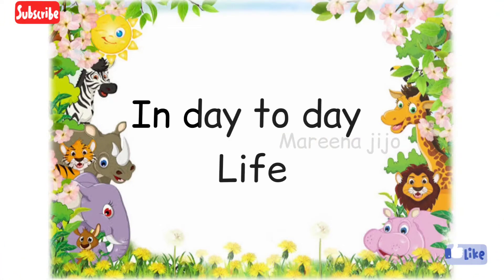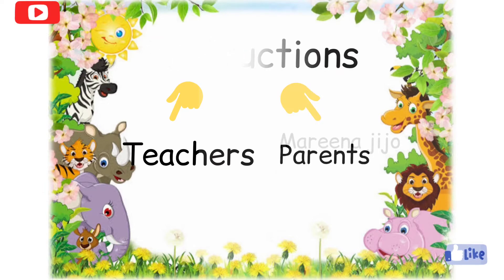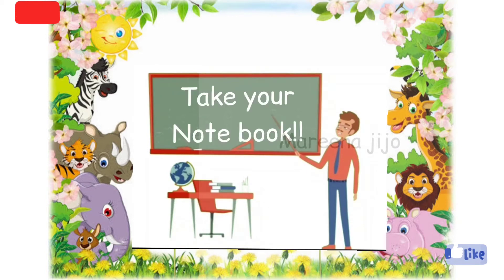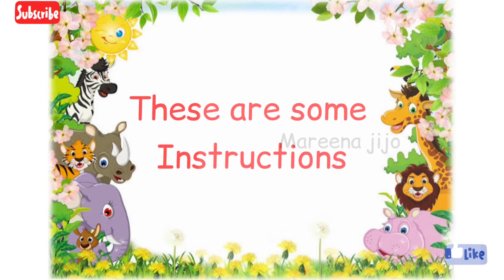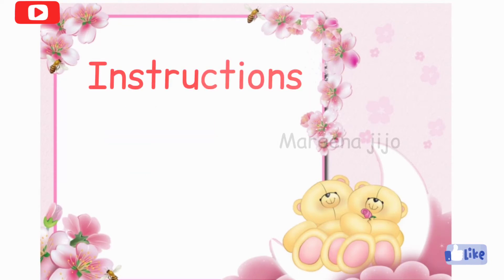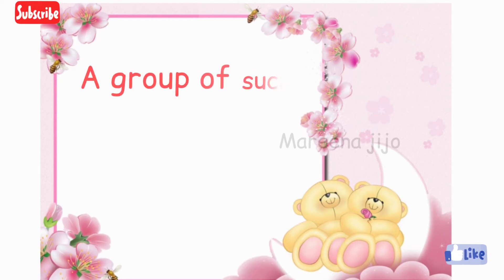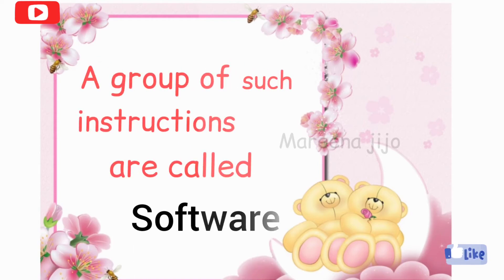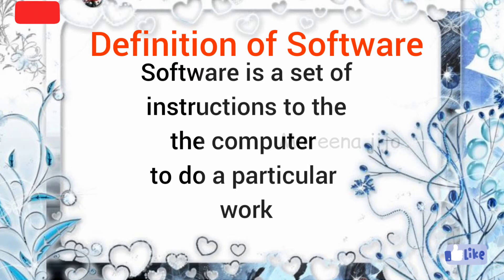In day to day life, you may get some instructions from your teachers and parents. For example, your teacher may ask you: take your notebook, write down the heading, etc. These are some instructions. We have to give instructions to the computer to do a particular work. A group of such instructions are called software. Definition of software: software is a set of instructions to the computer to do a particular work.